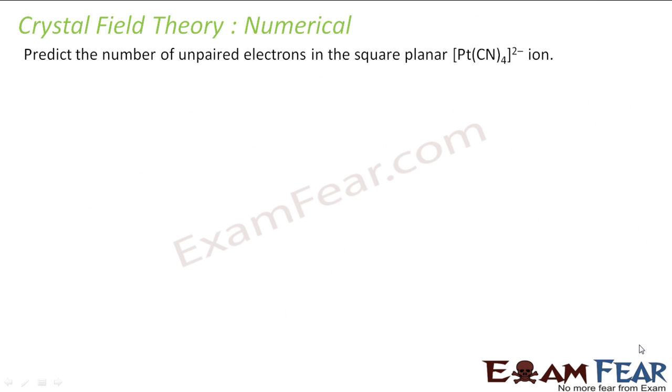Let's take this numerical. We have to predict the number of unpaired electrons in the square planar Pt(CN)4^2-. It is given that it is square planar. Square planar is dsp2 hybridization. So the hybridization is given, we have to predict the number of unpaired electrons.